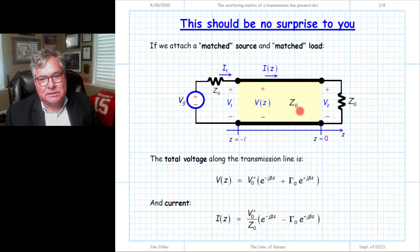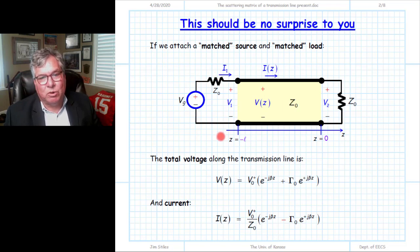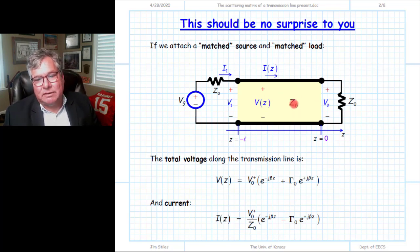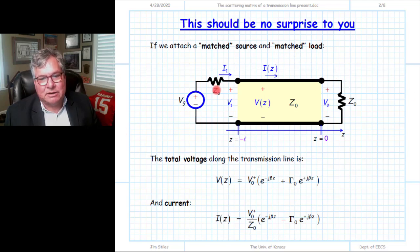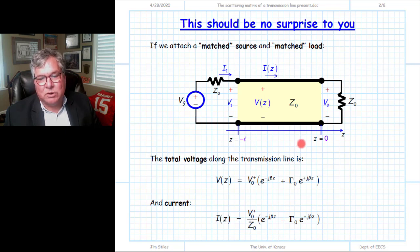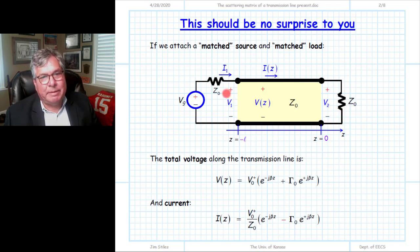This interior line happens to have the same value Z0, but that's not why the source and load are set to Z0. If this interior section had a characteristic impedance of three times Z0 — different from either of the other two — we would still attach a matched load and matched source set to Z0, determined by the external transmission lines connected to our ports. These values are set by the transmission lines connected externally to our device. We simply have a length of transmission line with a matched load at the end and a matched source at the beginning.